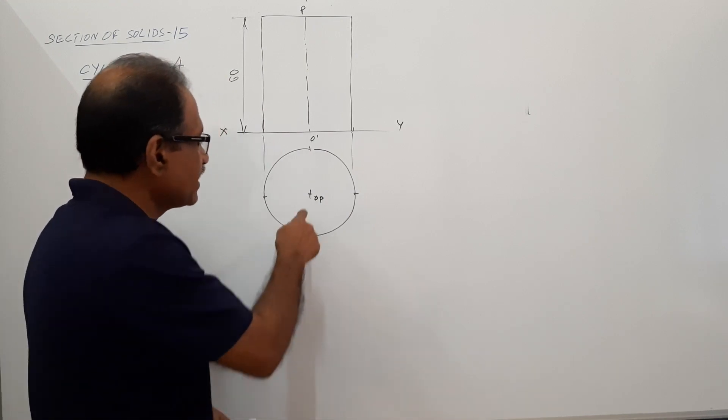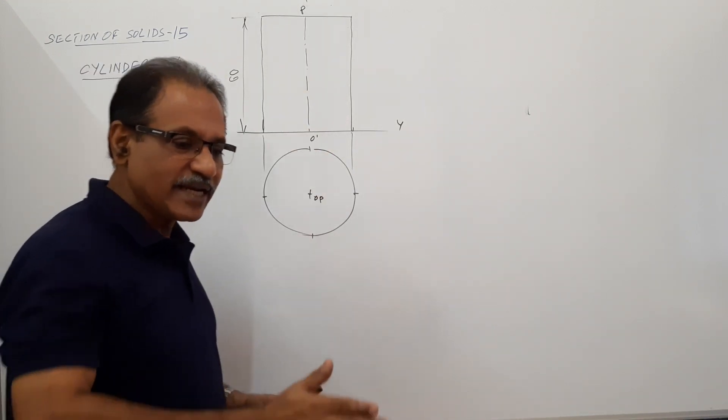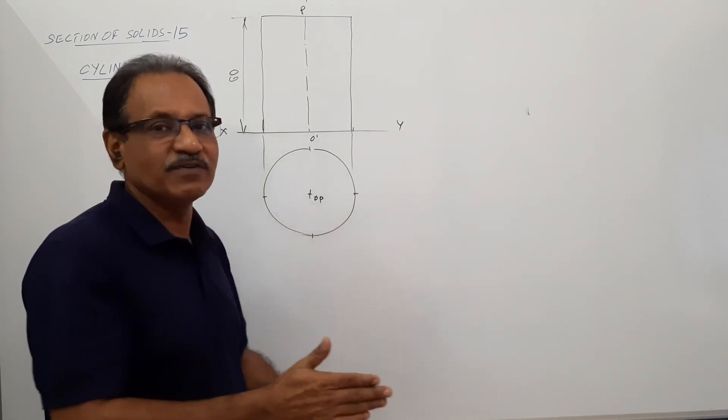Where is the vertical axis? This is the plan of the vertical axis, this is the elevation of the vertical axis. When the cutting plane is parallel to VP, it must be visible in the plan.